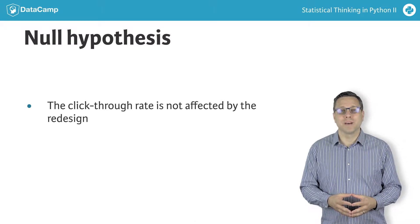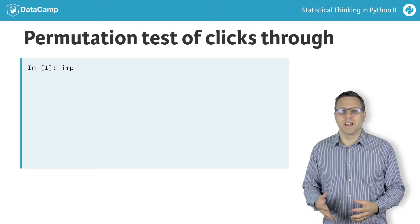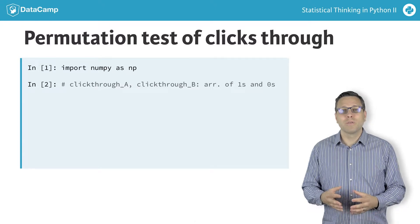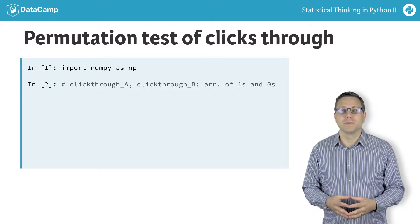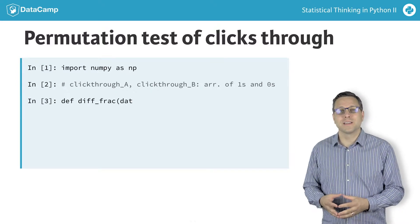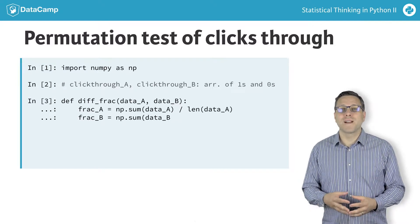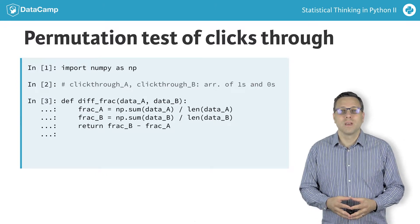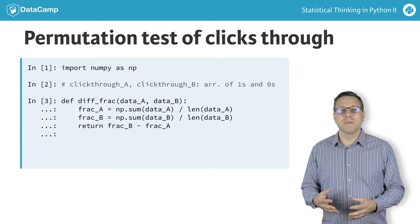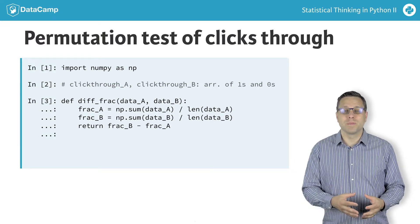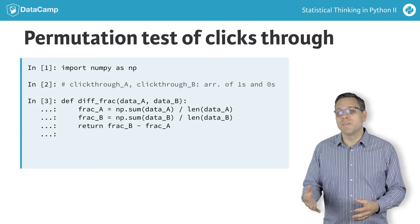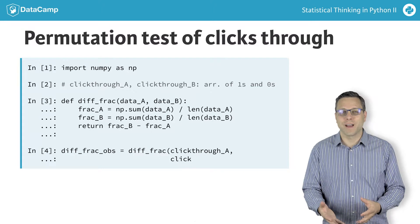Let's code it up in Python. For each splash page design, we have a numpy array which contains 1 or 0 values for whether or not a visitor clicked through. Next, we need to define a function, diff_frac, for our test statistic. Ours is the difference of the fraction of visitors who clicked through. We can compute the fraction who clicked through by summing the entries in the arrays of 1s and 0s and then dividing by the number of entries. Finally, we compute the observed value of the test statistic using this function, diff_frac.